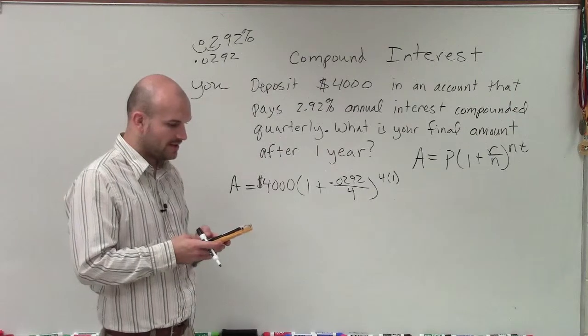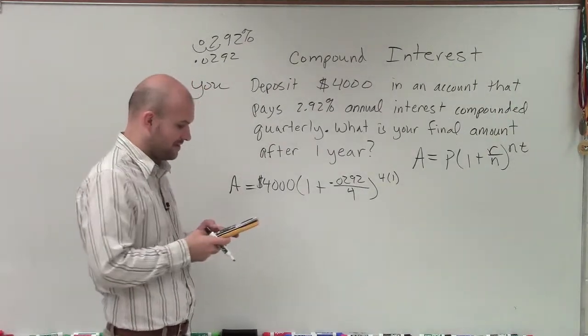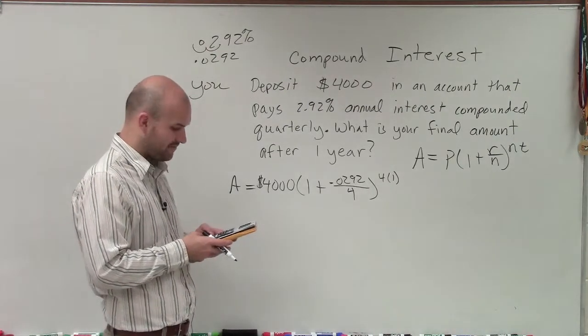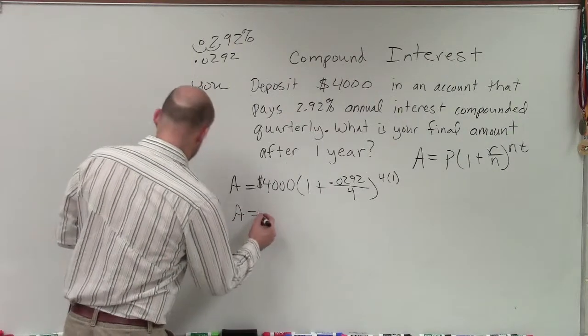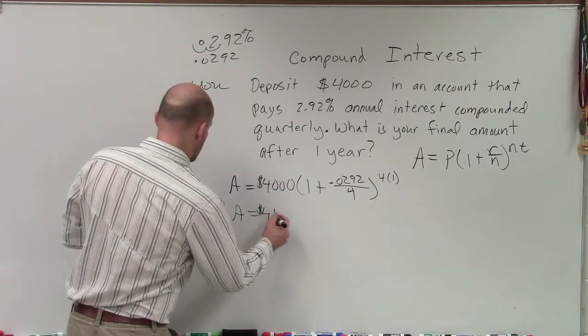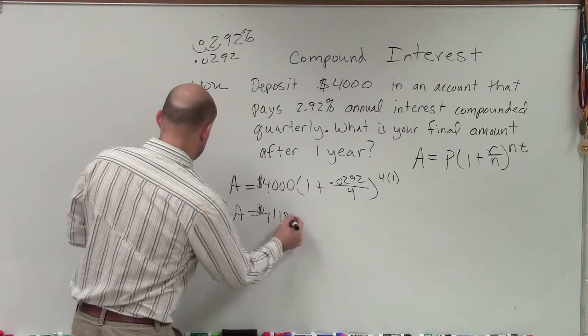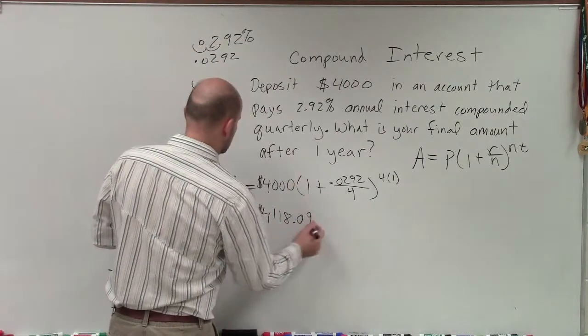Add that to 1, so I get 1.0073. Then raise that to the fourth power and multiply by 4,000. I get a final amount after one year of $4,118.09.